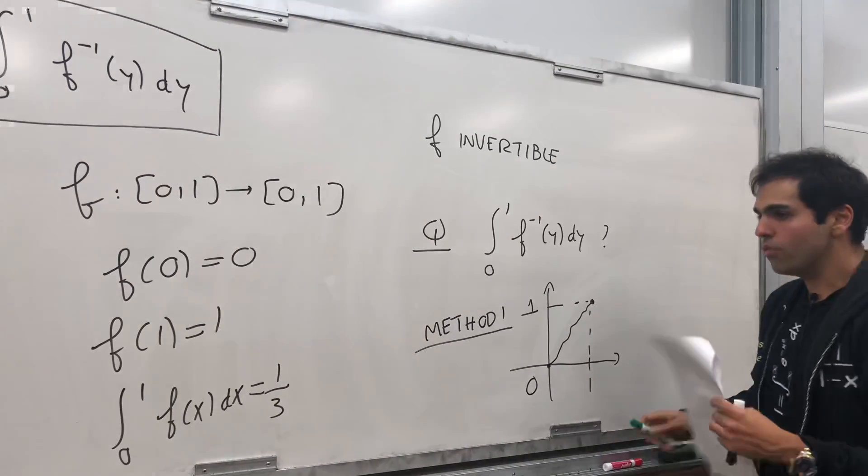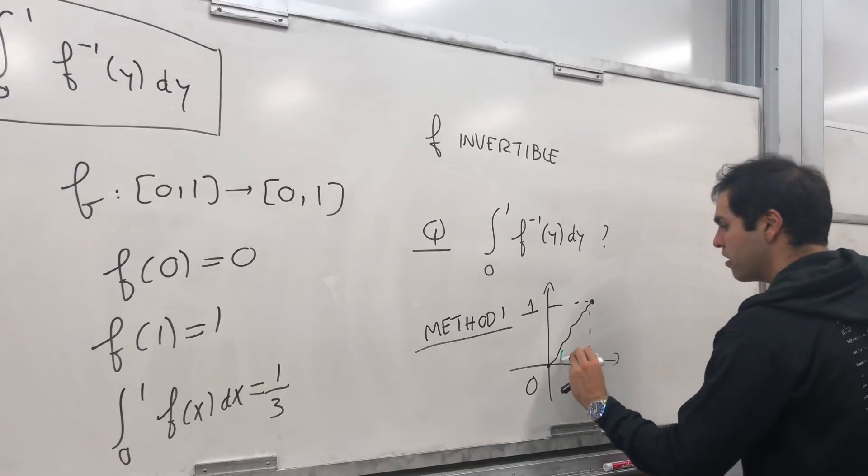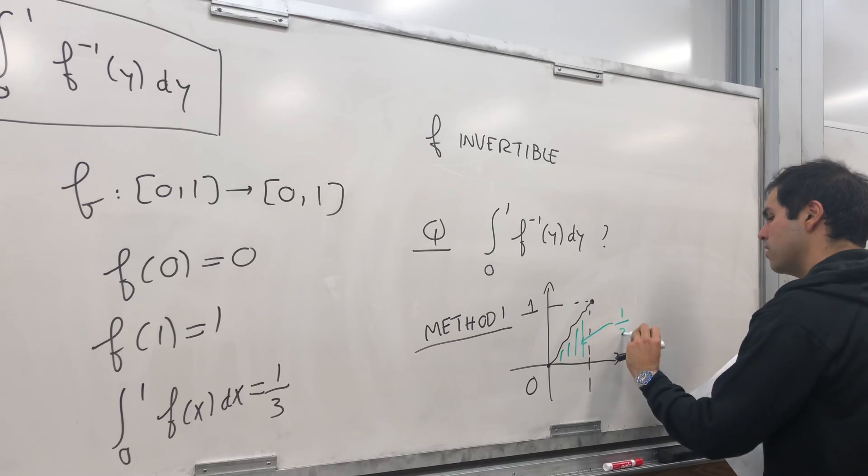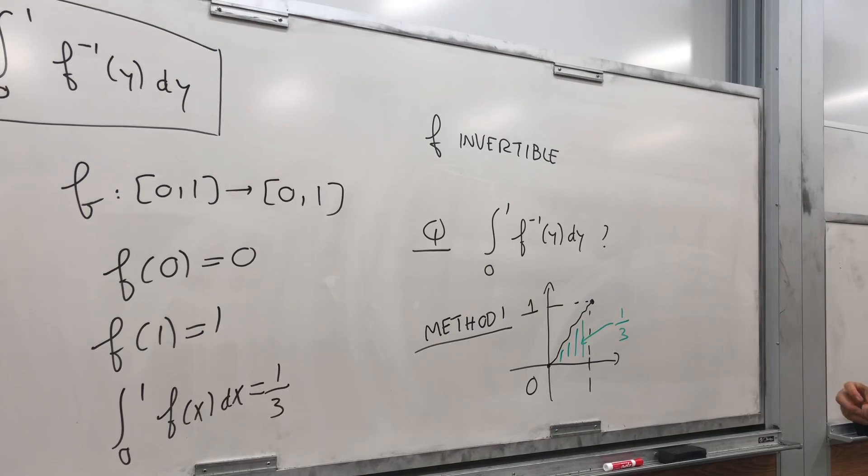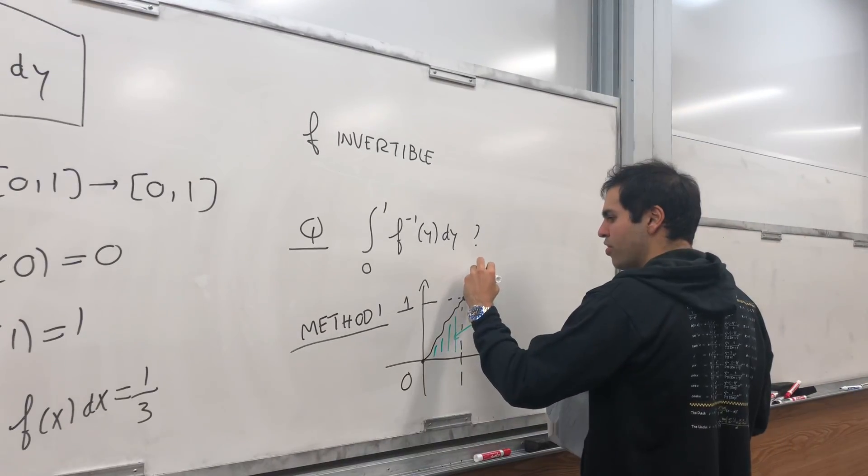And moreover, what do we know? Well, we know that the integral from 0 to 1 of f is 1/3, so we know this area is 1/3. And now the question is, what is the integral from 0 to 1 of f inverse of y dy?